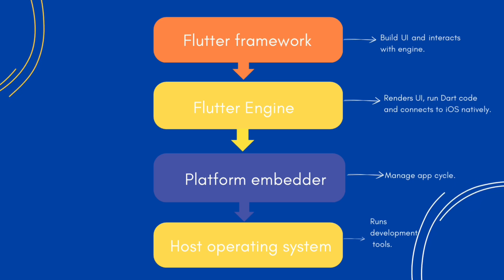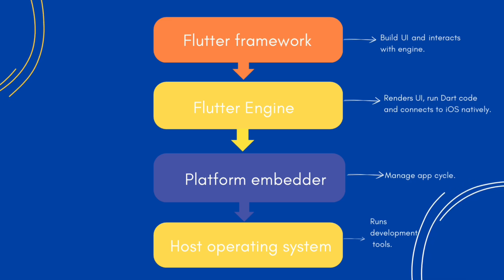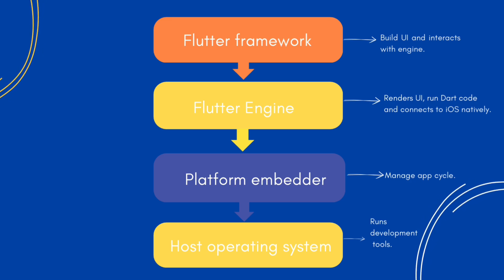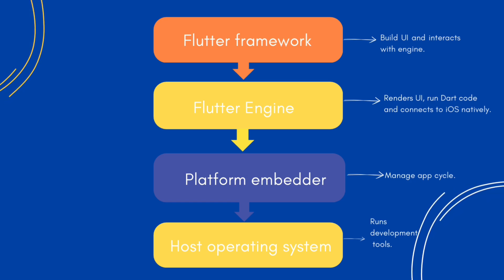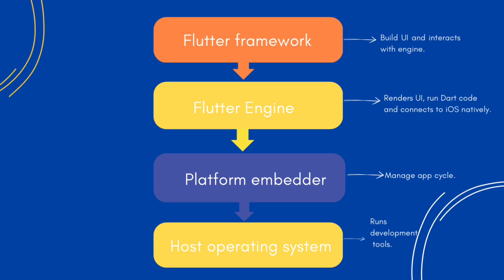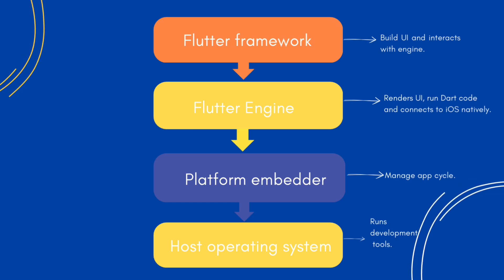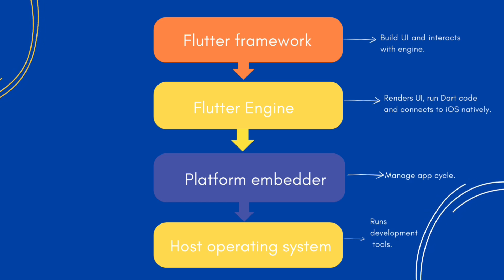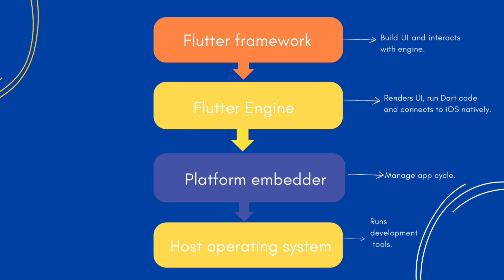Now how does this code actually work on an iPhone? When you build your Flutter app, the Flutter engine converts your Dart code into optimized machine instructions for the graphics hardware, similar to how native iOS frameworks work. On iOS, Flutter compiles your code using an ahead-of-time compiler into machine code, because just-in-time compilation isn't allowed on iOS due to Apple's restrictions.